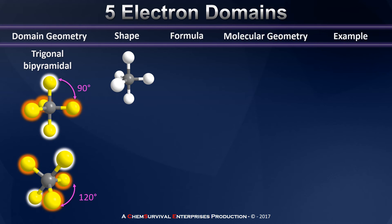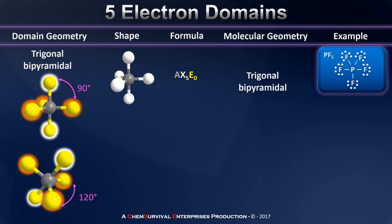Let's begin with the compound that has only bonding electron domains in a five-domain geometry: an AX5E0 compound. As usual, the molecular geometry is the same as the domain geometry, trigonal bipyramidal. An example is phosphorus pentafluoride, in which the phosphorus in the center has five bonding electron domains. Remember, phosphorus can have an expanded octet because it hails from the third row of the periodic table.